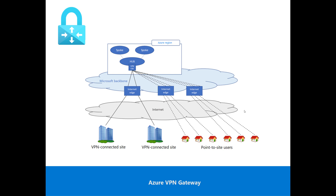Azure VPN Gateway supports both point-to-site and site-to-site connections. A point-to-site VPN connection can be used to connect a single computer to a virtual network — what we call a P2S connection — which is established by starting it from the client computer.